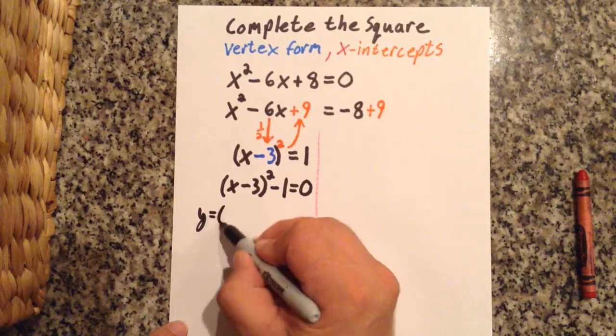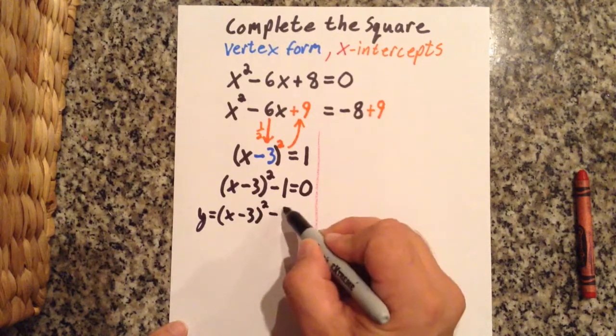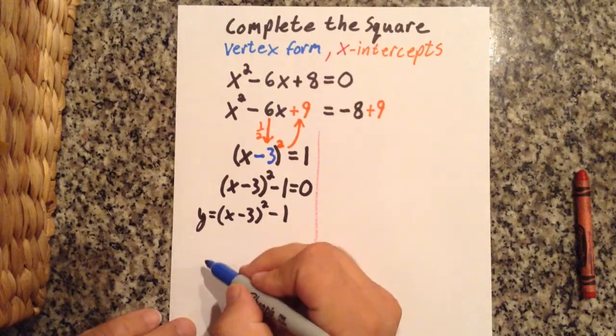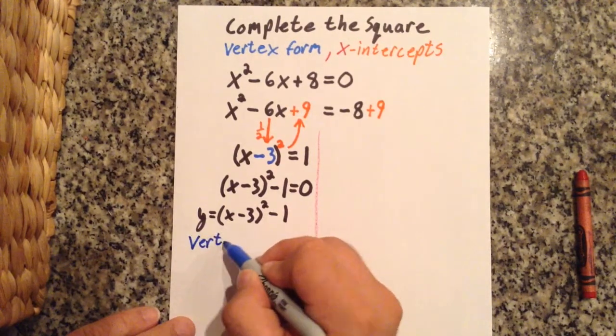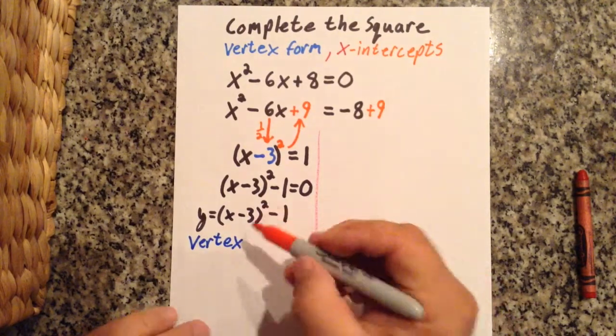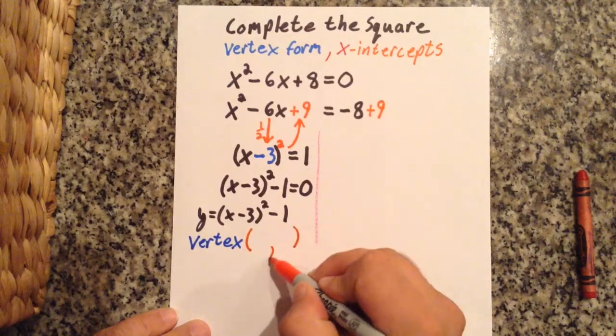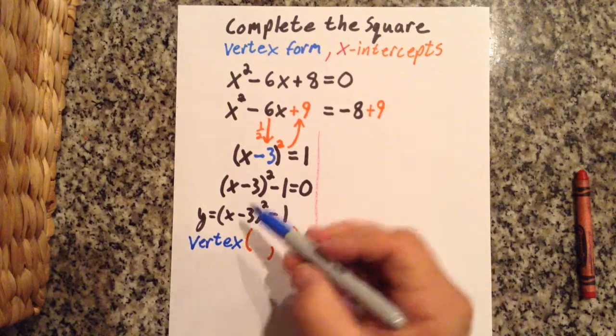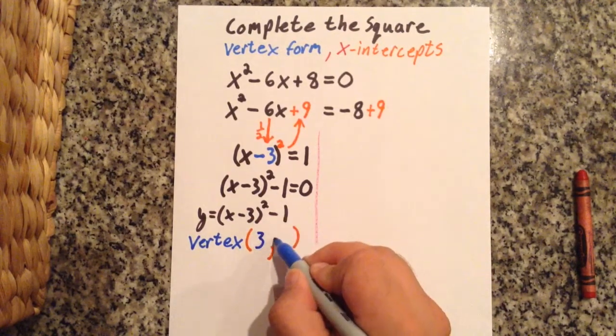So if I had y equals the quantity x minus 3 squared minus 1, the vertex is staring me in the face. All I have to do is pattern match the h and the k. And the vertex of this equation is going to be opposite same: 3, negative 1.